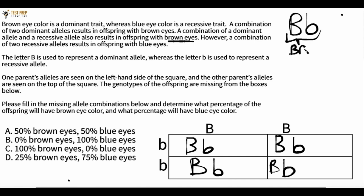Now in all of the, for all four of the different combinations of alleles that we see down here, they all have one big B allele and one little B allele. So actually in this case here, it's going to be 100% brown eyes and zero blue eyes.